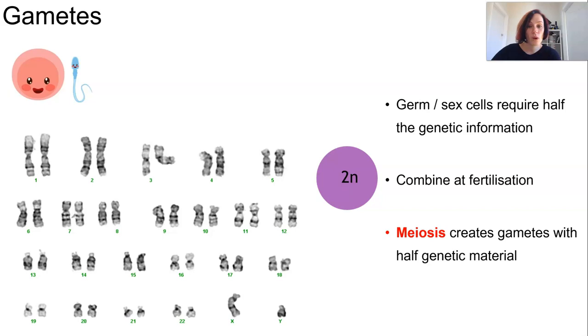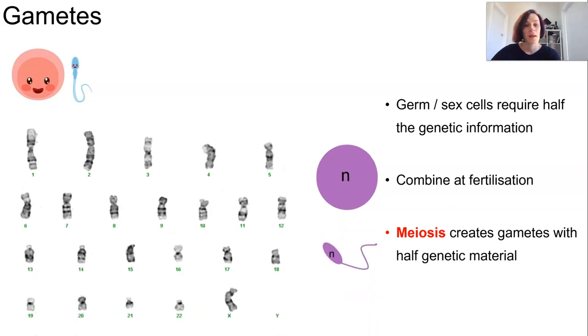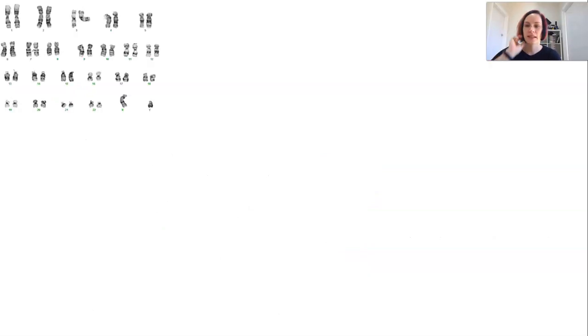This is a diploid cell, it's got one of each pair of chromosomes, but this is a haploid gamete. If we discuss humans specifically, our diploid somatic cells have 23 pairs of chromosomes and these pairs are known as homologous chromosomes.